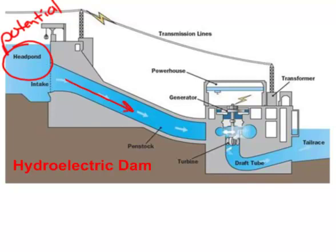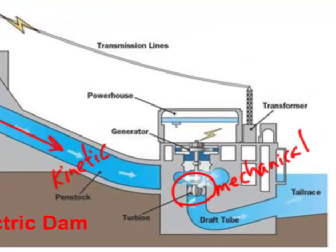Water is then allowed to travel down the penstock, going down with gravity. The potential energy is now being converted into kinetic energy. That kinetic energy of the water strikes the turbine, making it spin — so we now have mechanical energy. The shaft of the turbine is connected to a generator, where copper coils and magnets generate electricity. The spinning energy gets converted into electrical energy.